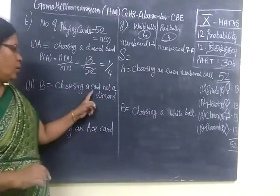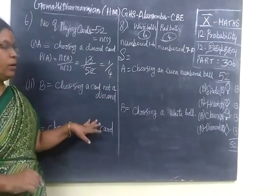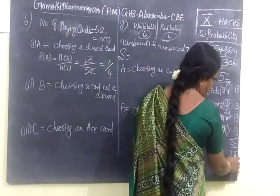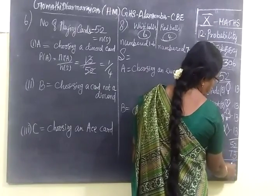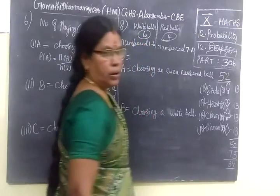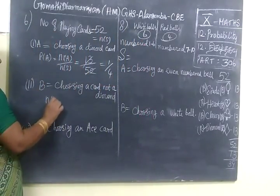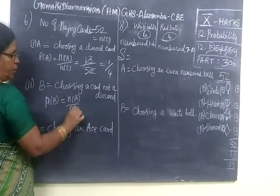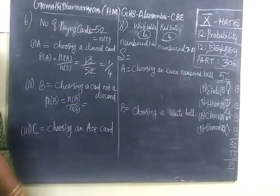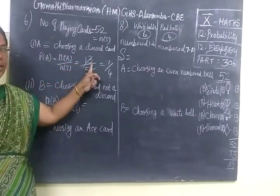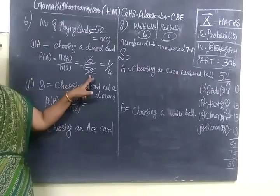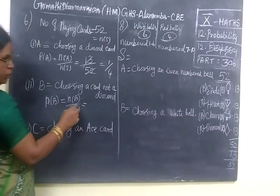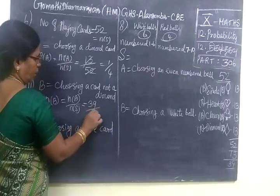Then choosing a card that is not a diamond. The remaining are not diamond cards. Totally 52 cards — you subtract 13 diamond cards. So the remaining are not diamond cards: 39 cards. So P of B equals N of B by N of S. Total is 52 cards, diamond cards are 13, so the remaining 52 minus 13 gives 39. So 39 by 52.